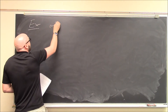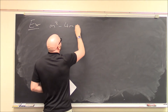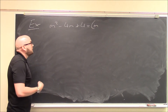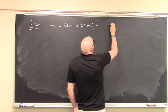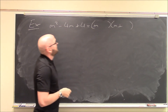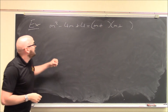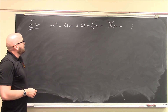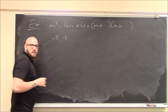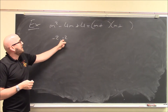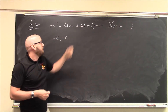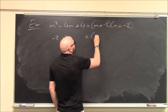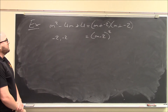We'll do another example with m as our variable: m squared minus 4m plus 4. If it does factor — not all trinomials do — it factors as (m plus some number)(m plus some number). The two numbers must add to minus 4 and multiply to positive 4. It turns out they're both minus 2: minus 2 plus minus 2 is minus 4, and minus 2 times minus 2 is positive 4. So this factors as (m minus 2) squared.